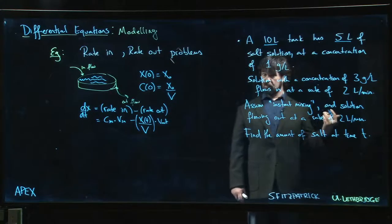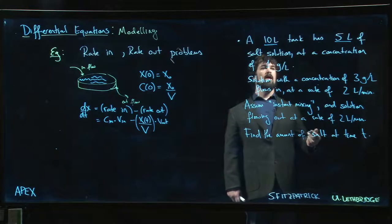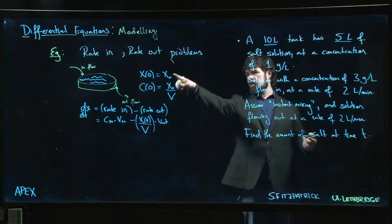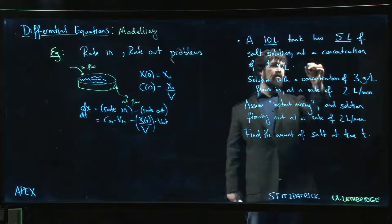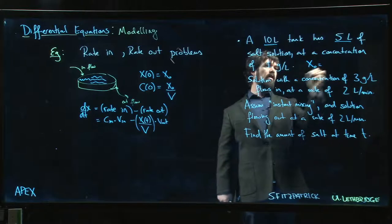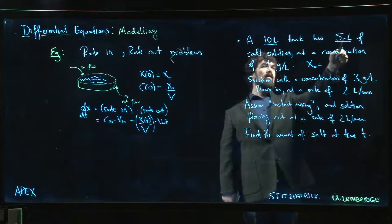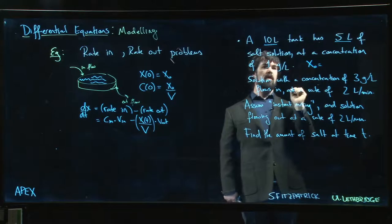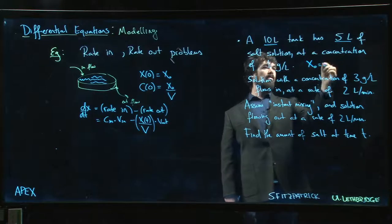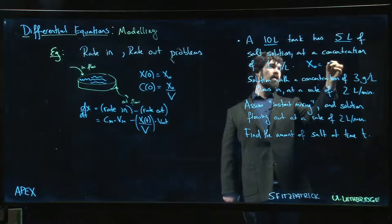The important value here for that volume V is the amount of solution, not the size of the tank. It's good to keep that in mind. So the initial amount of salt, X(0) or X naught if you like, is how much? Well, at time zero we have five liters of solution at a concentration of one gram per liter, so one gram per liter times five liters gives me five grams.